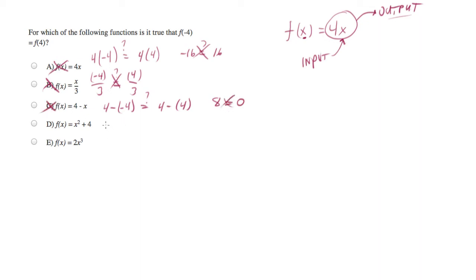How about D? Negative 4 squared plus 4. Is that equal to 4 squared plus 4? One side of this equation is 16 plus 4. And the other side is also 16 plus 4. I don't even have to evaluate this to see that that's true. And D is going to be the right answer.